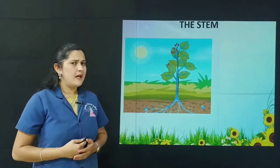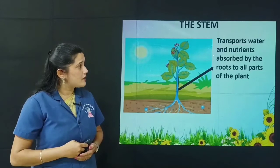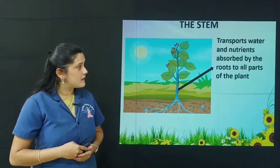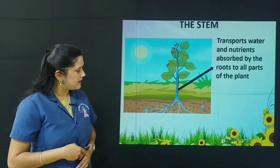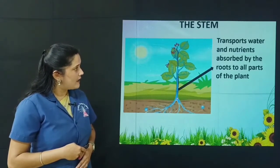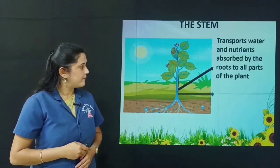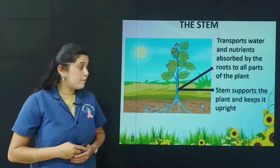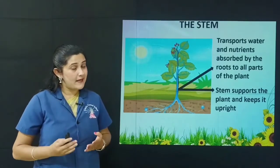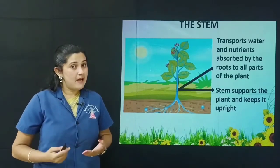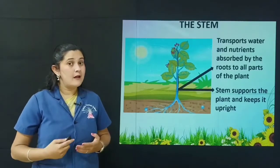The stem — how does the stem help the plant? The stem transports water and nutrients absorbed by the roots to all parts of the plant. The water and minerals absorbed by the roots are transported to different parts of the plant by the stem. The stem also supports the plant and keeps it upright.